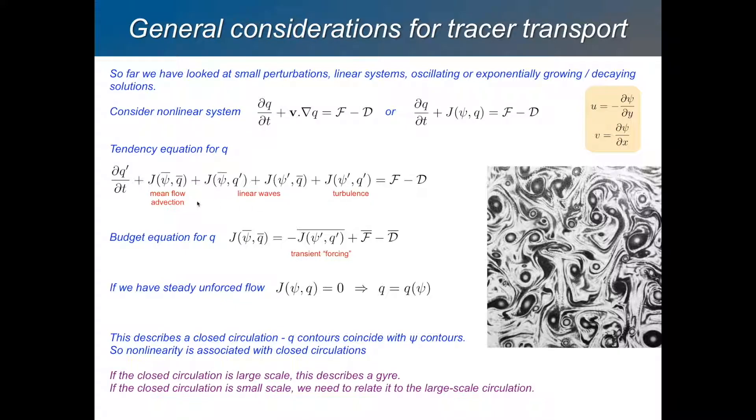So if we take the time mean of this whole equation, then the time mean of the advection, the advection of the mean tracer by the mean flow, will be balanced by three things. It will be balanced by the mean of the forcing, the mean of the dissipation, and the mean of this transient forcing term. We've put this term on the right-hand side and we're considering it as some sort of forcing, the forcing by the transient fluxes. And that, I already discussed in the first lecture, in terms of temperature. But quite often people discuss it in that way. So there's a formalism we're going to use in this lecture.